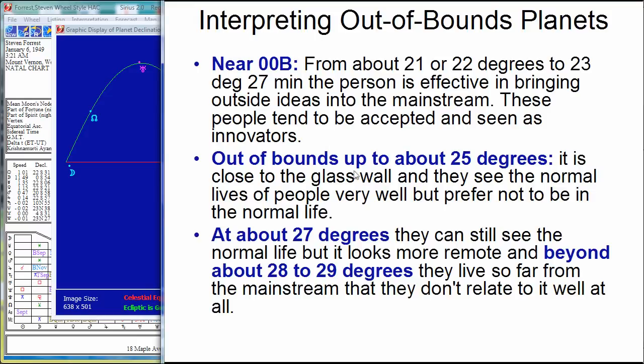Now, if you're out of bounds, but not way out of bounds, up to about 25 degrees roughly, within about a degree and a half or so of being out of bounds, you're close to the glass wall. So you can see what most people are doing. You prefer not to be in the mainstream or doing the normal life, but you know how it works. So you're outside the normal way of doing things, but you're not out of touch.